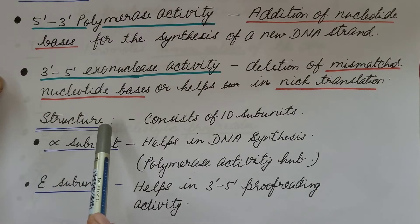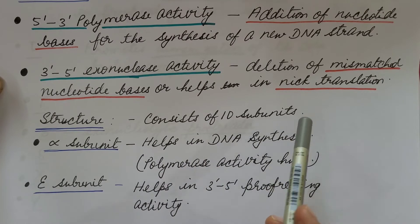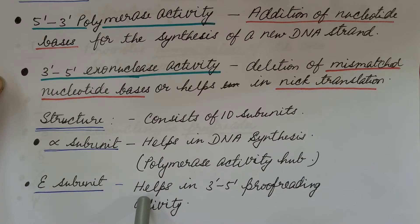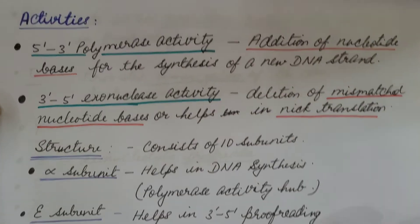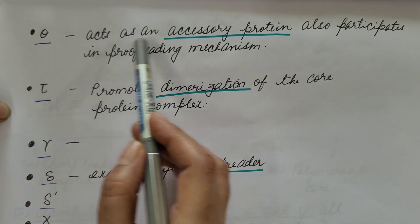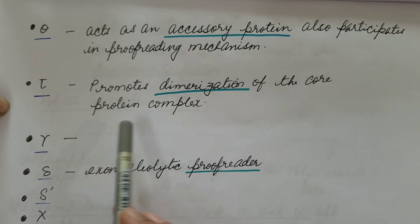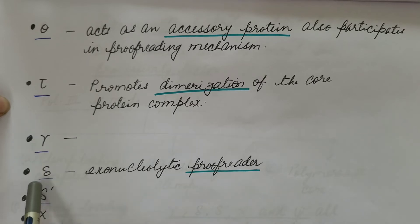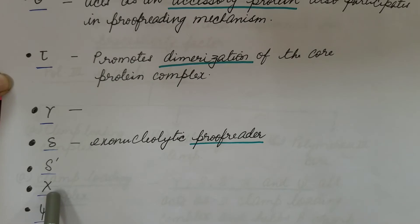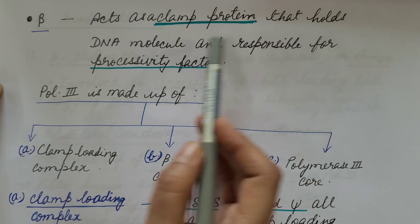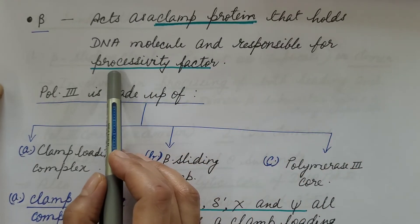The structure of DNA polymerase 3 consists of 10 subunits. The alpha subunit helps in DNA synthesis and is known as the polymerase activity hub. The epsilon subunit helps in 3'→5' proofreading activity. The theta subunit acts as an accessory protein and also participates in proofreading. The tau subunit promotes dimerization of the core protein complex. The gamma subunit, delta subunit (exonucleolytic proofreader), delta dash subunit, xi subunit, psi subunit, and finally the beta subunit — which acts as a clamp protein that holds DNA molecules and is responsible for the processivity factor.